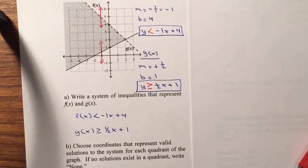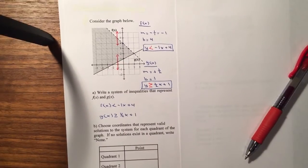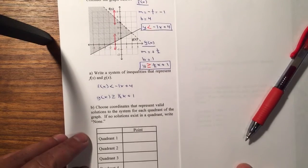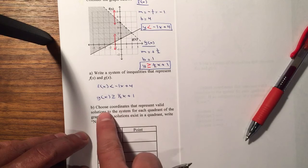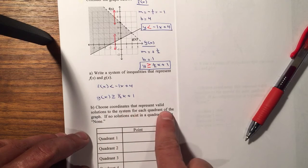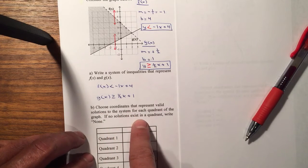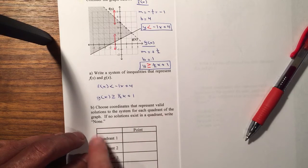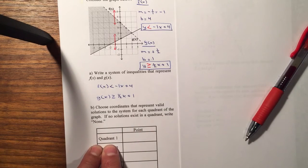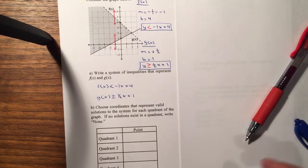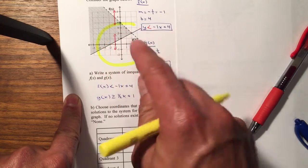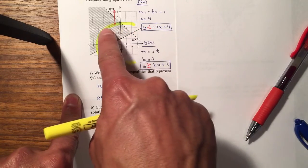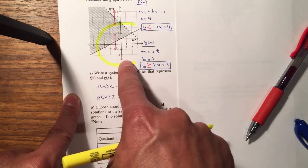Now, letter b. For letter b, it says choose coordinates that represent valid solutions to the system for each quadrant of the graph. If no solutions exist in a quadrant, write none. For quadrant number 1, remember your quadrants. Quadrant comes from the word cuadro in Spanish, so always think of the C. So this is quadrant 1, quadrant 2, quadrant 3, and quadrant 4.